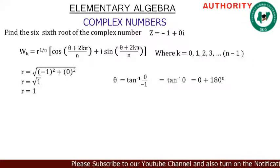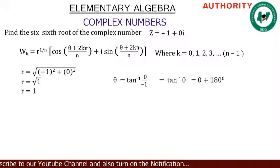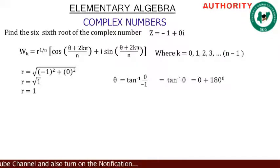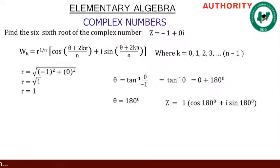Theta = tan⁻¹(0 / -1). Zero divided by minus one is zero, and tan⁻¹(0) = 0. But this angle doesn't correspond to the correct quadrant, so we add 180°. Therefore theta = 180°.